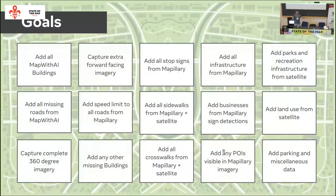I had about 15 goals, which compress down to almost everything you'd want to add to a map when none of it exists yet — starting with buildings from AI tracing, putting Mapillary on every street, infrastructure, POIs, parking, and parks.